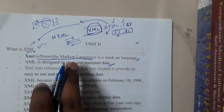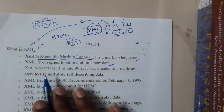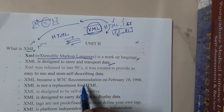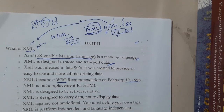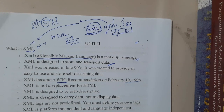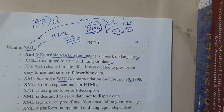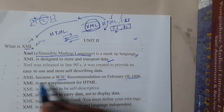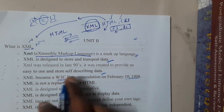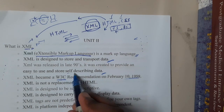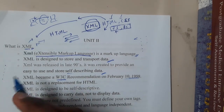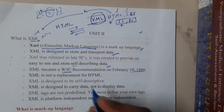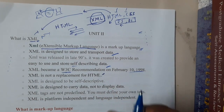Transporting and storing data is better and faster through XML. XML was released in the late 1990s — 1998 — and was recognized by W3C (World Wide Web Consortium). It was created to provide easy storage of self-descriptive data. Self-descriptive means you design your own tags. Also, XML is not a replacement of HTML — please remember that.